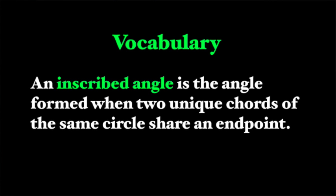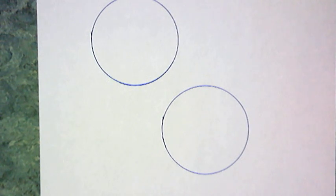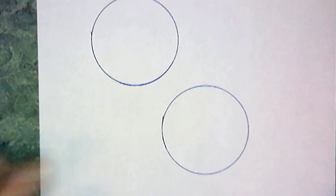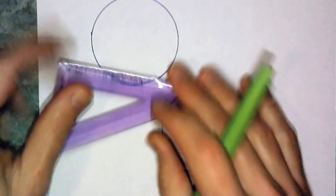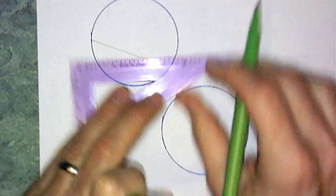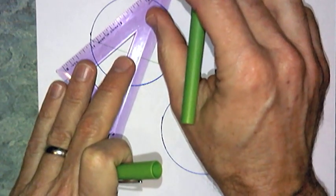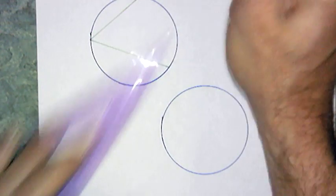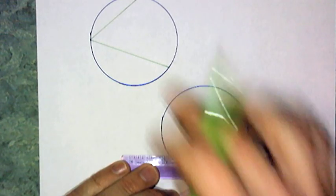We're going to talk about an inscribed angle. An inscribed angle is the angle formed when two unique chords of the same circle share an endpoint. So let's take a look at what that might look like.